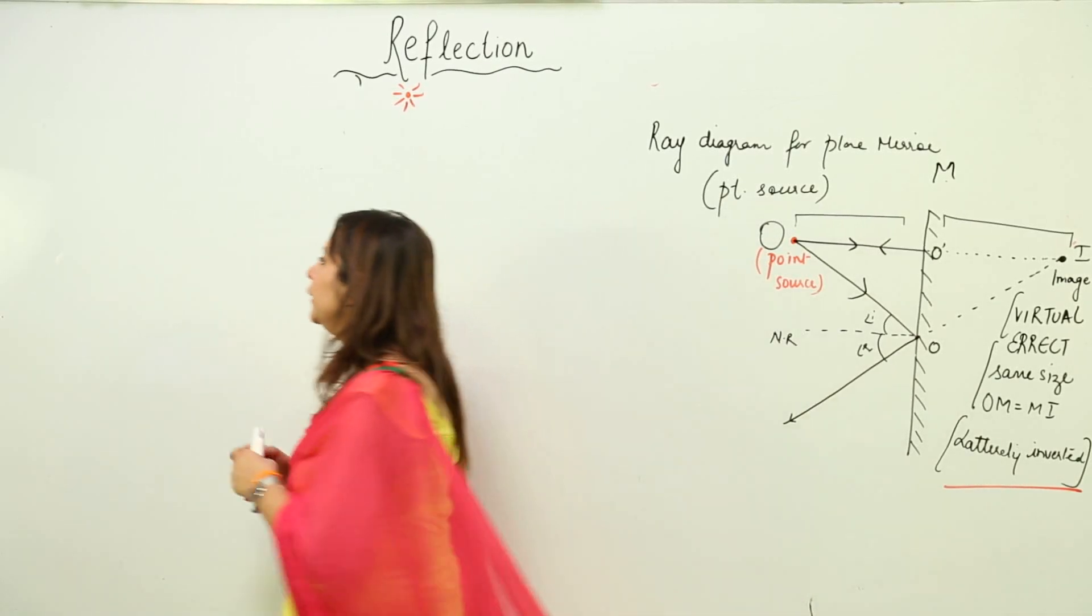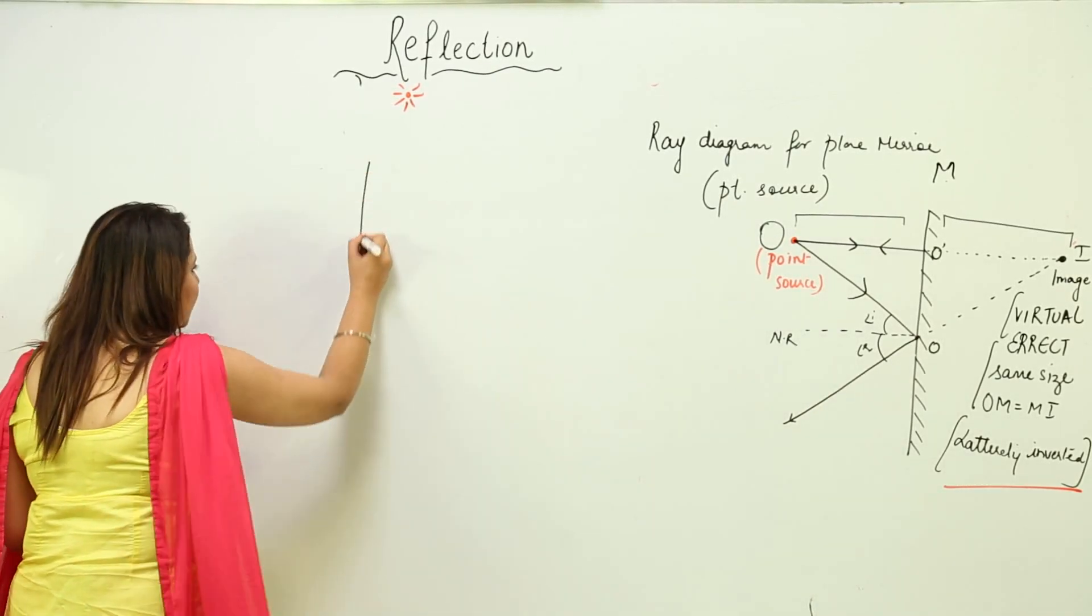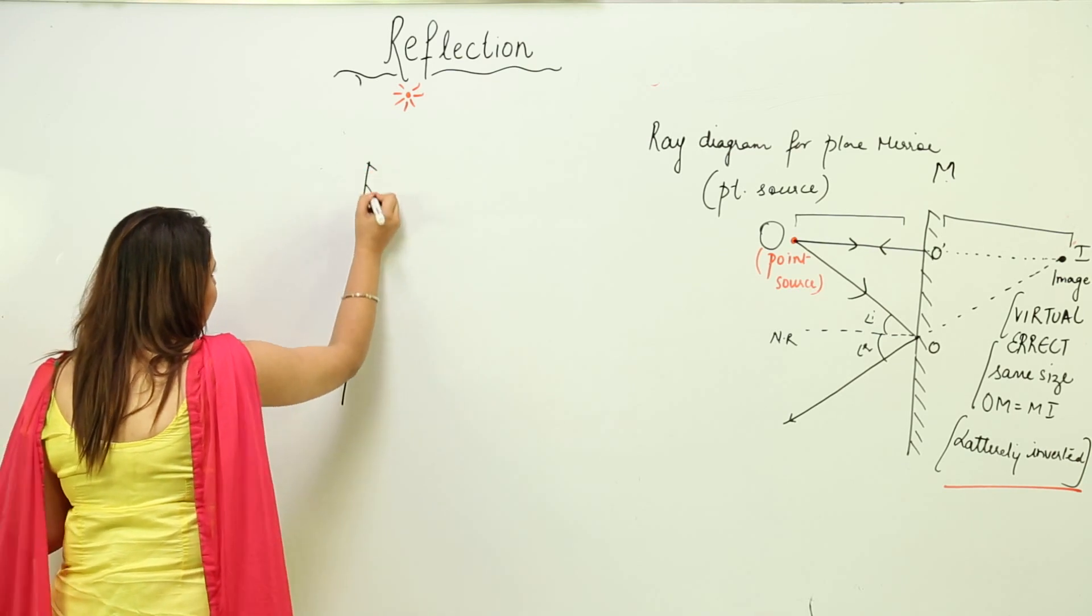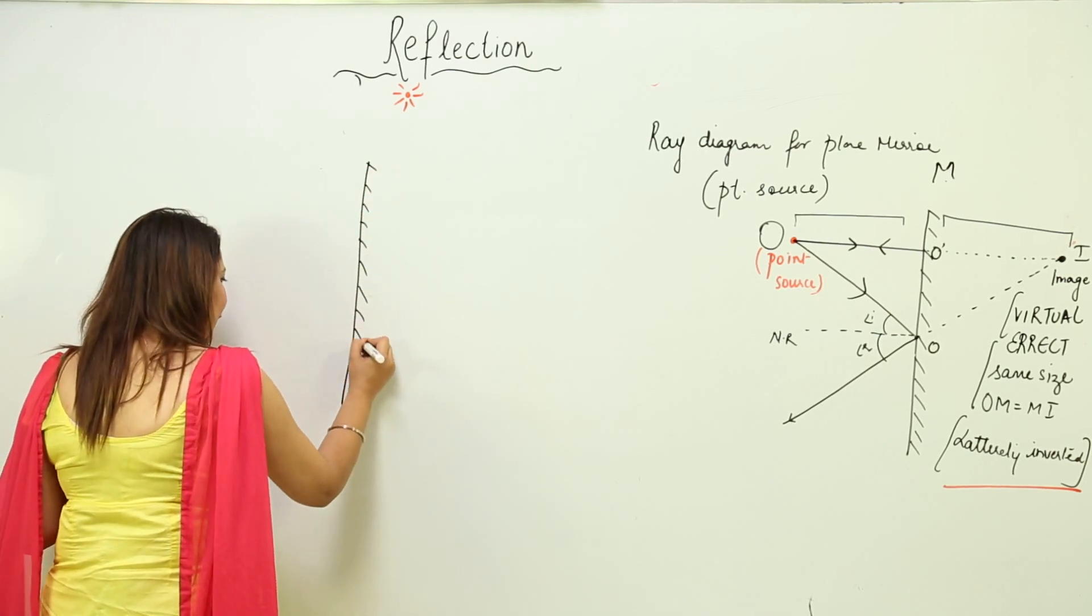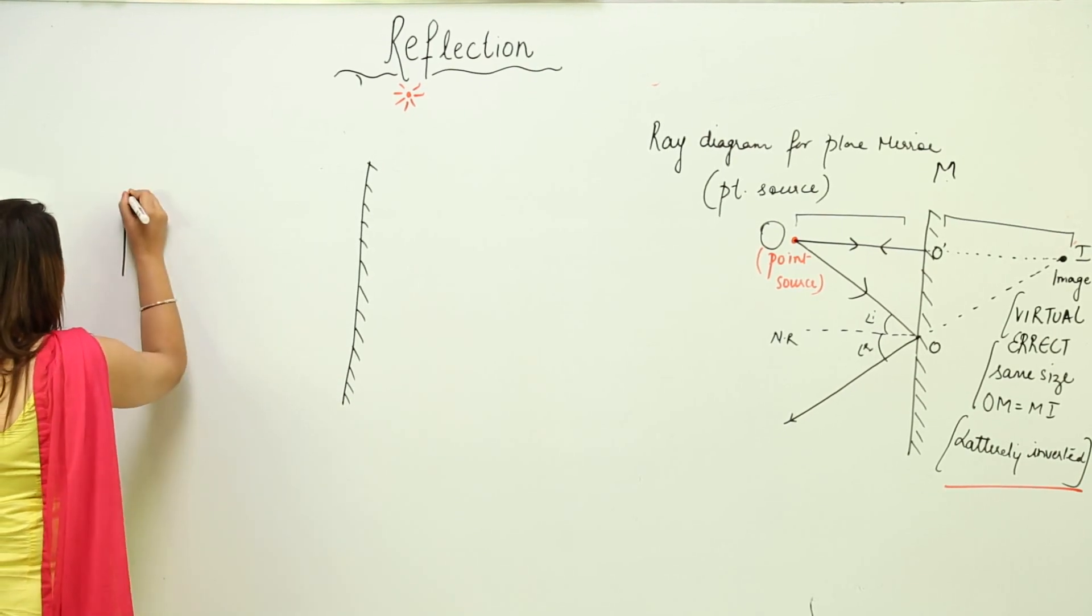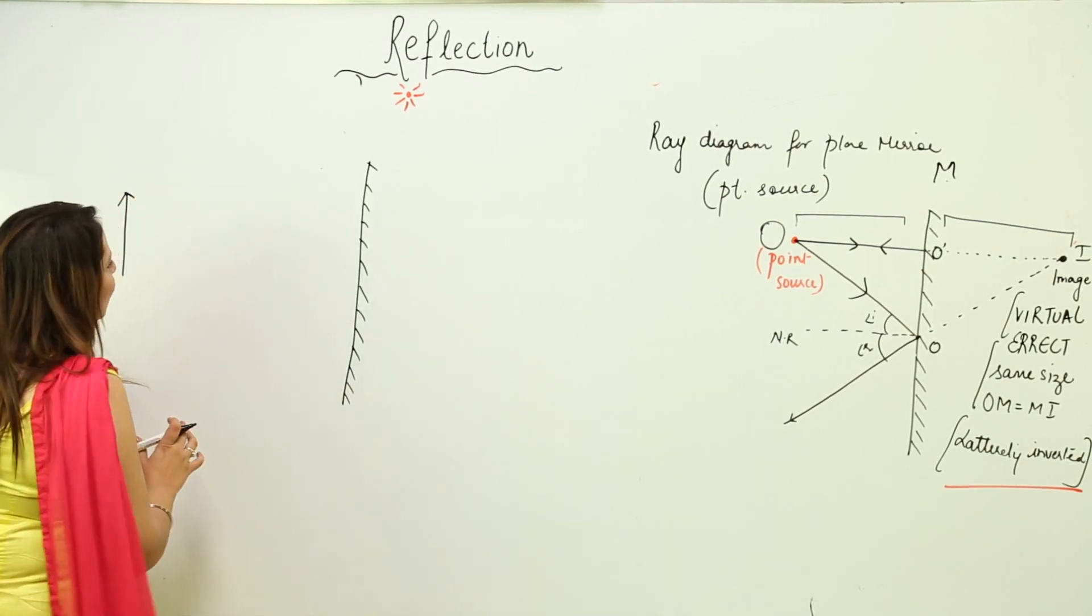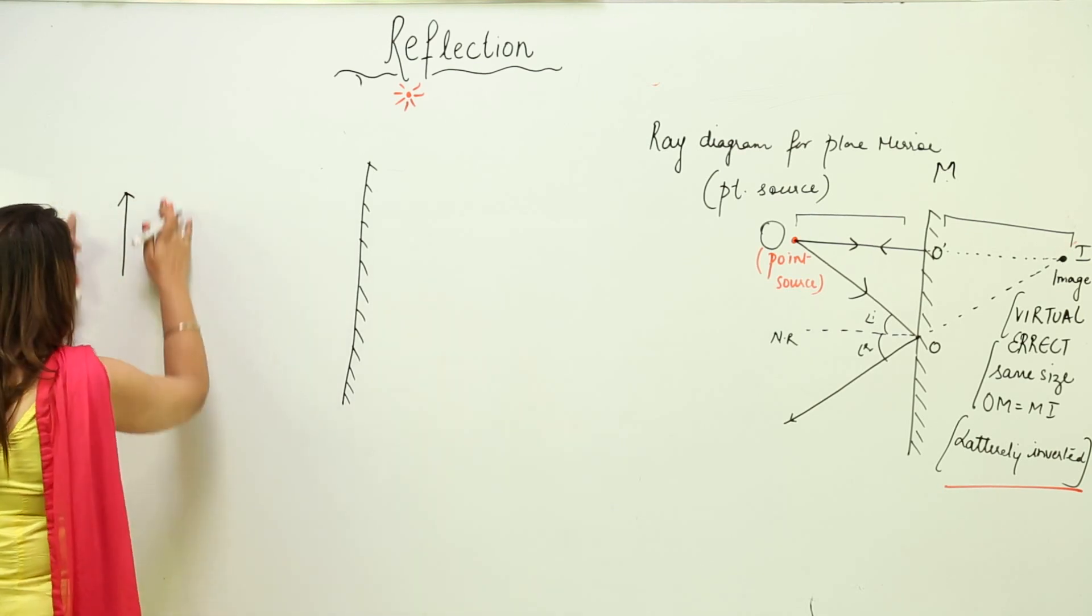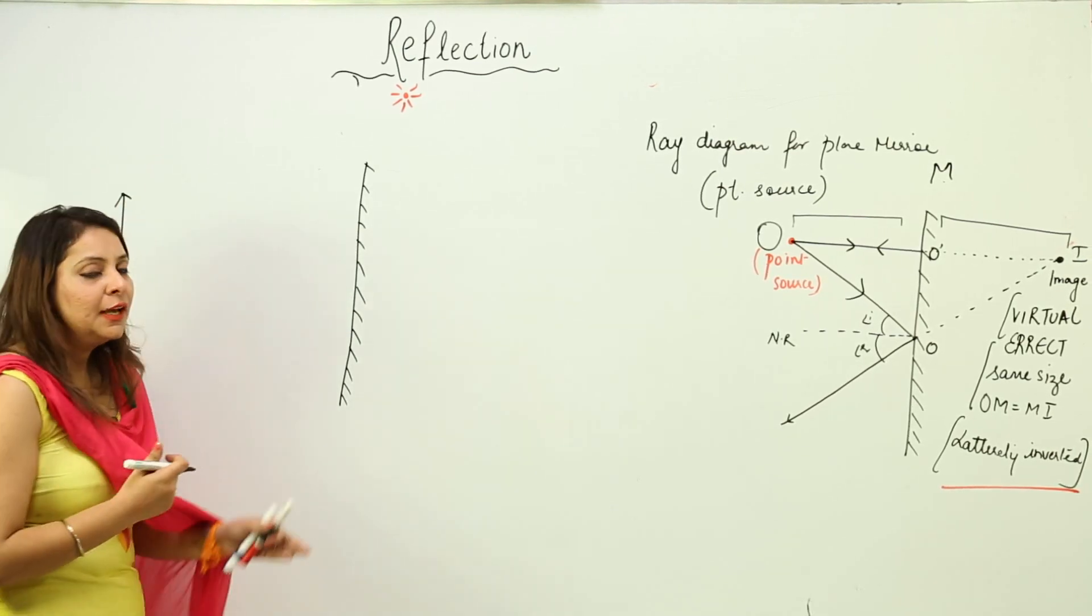Now we'll see what kind of image is formed by a plane mirror when you have a finite object. This is my plane mirror again, a big line with small oblique lines. Let's say this is my finite object, meaning of limited length. This complete source is emitting light.